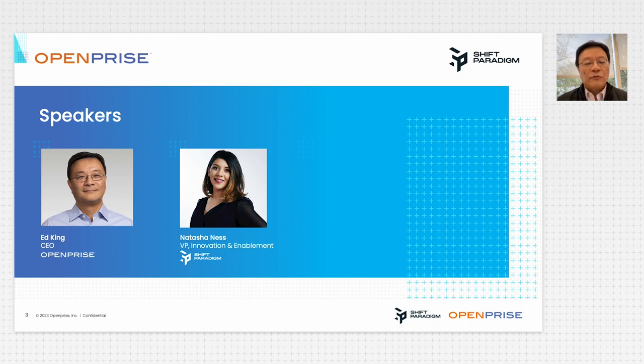OpenPrice is a RevOps data automation platform. We help you integrate your funnels and automate your ops. Very happy to have with me today Natasha Ness from Shift Paradigm, VP Innovation Enablement. At our agency, Shift Paradigm, we help organizations—typically mid-size to enterprise—really get the most out of their technology and their overall marketing tech stack with the right strategy in place.